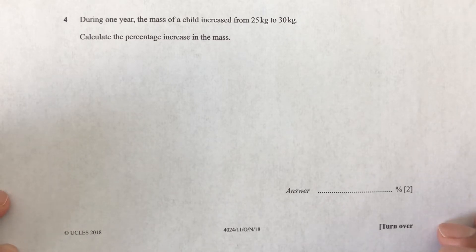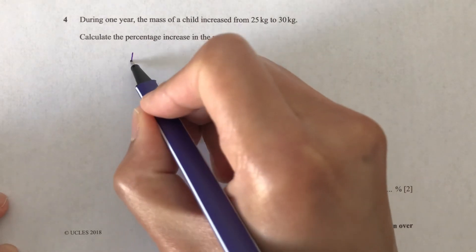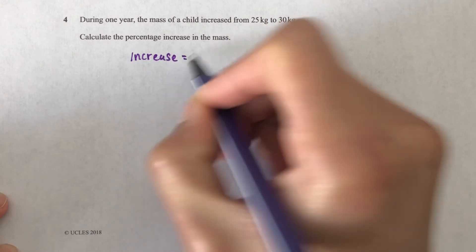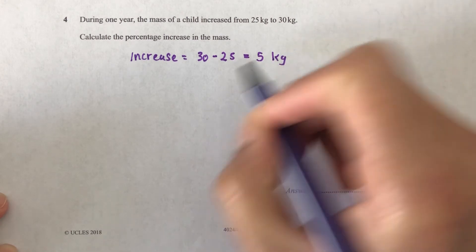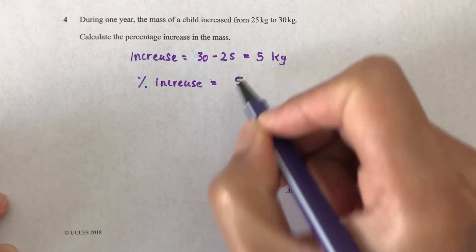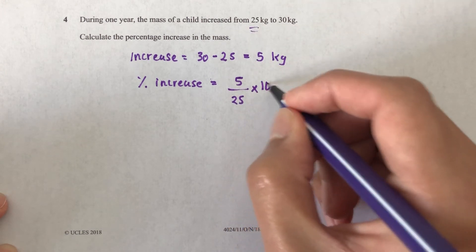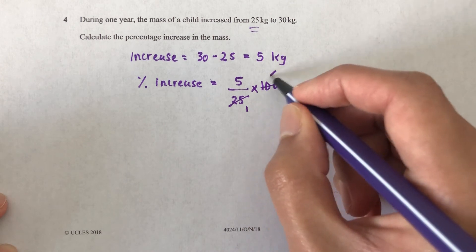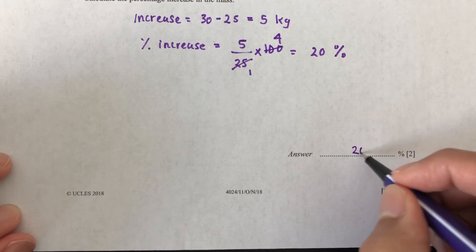Question number 4: during one year, the mass of a child increased from 25 kg to 30 kg. Calculate the percentage increase in mass. First, calculate the increase: 30 minus 25 equals 5 kg. Then percentage increase equals the increase over the initial weight times 100: 5 over 25 times 100 equals 20%. That's your answer — a 20% increase in mass.